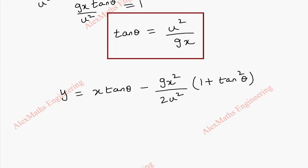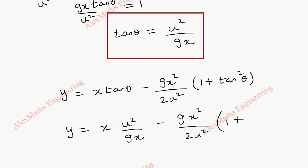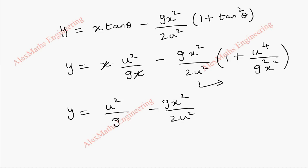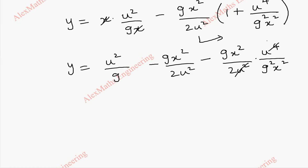In both tan theta terms, we can replace with u squared by gx. So y equals x times u squared by gx, minus g x squared by 2u squared into 1 plus tan squared, which is u to the power 4 by g squared x squared. Multiplying through, we can cancel terms: u squared cancels leaving u squared remaining, g cancels, and x squared on the whole cancels. So the remaining first term is u squared by g.